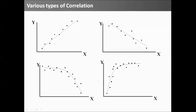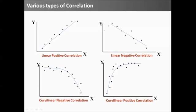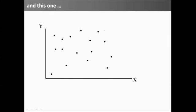So, there are various types of correlations. As you can see, the first one is linear positive correlation. Second one is linear negative correlation. Fourth one is curvilinear positive correlation. And this is curvilinear negative correlation. What do you think about this one? Well, there is no relation. No correlation or no relation.